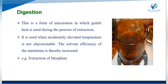Now we will see digestion. This is a form of maceration in which gentle heat is used during the extraction process. It is used when moderately elevated temperature is not objectionable, so the solvent efficiency of the menstruum is thereby increased. An example is the extraction of morphine.